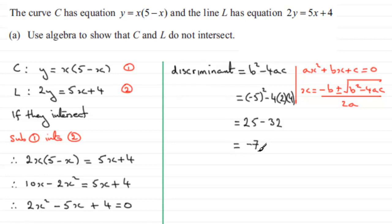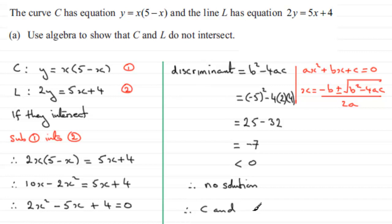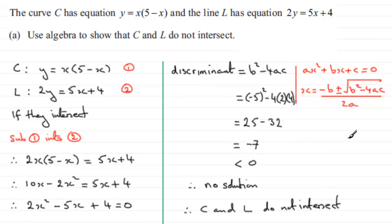So it's a negative number — less than 0. Therefore there cannot be any solution, therefore no solution to our equation, and that means that C and L do not intersect. There had to be something in that where we had an equation that we couldn't solve if they didn't intersect. It's this quadratic equation with no roots, because the discriminant was negative, meaning you couldn't square root a negative number.